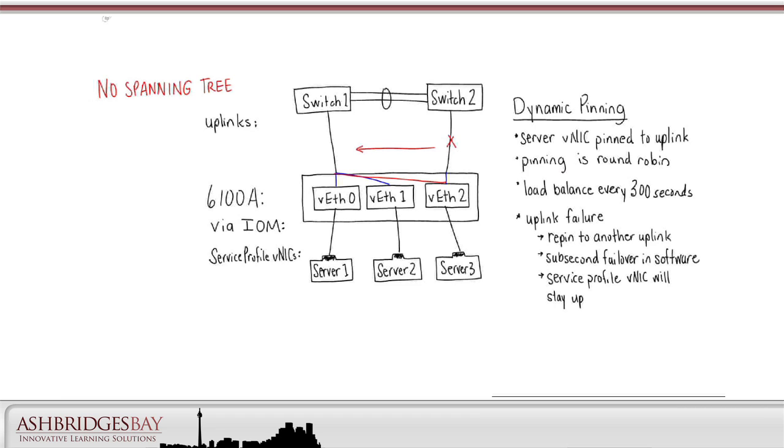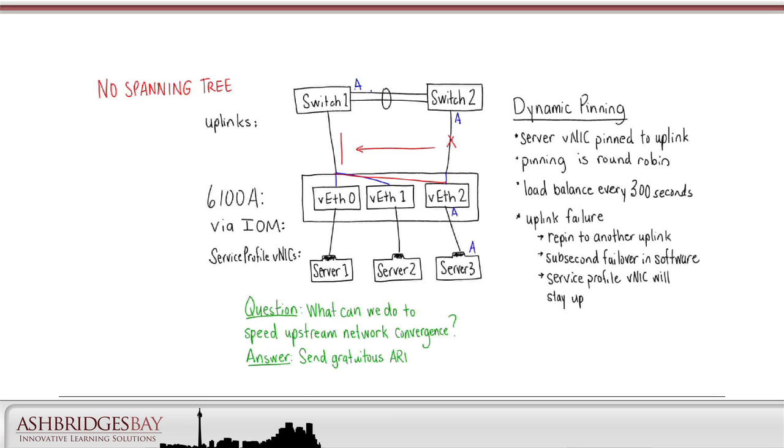The service profile vNIC will stay up. If you look at network convergence in the upstream switches, you see that the MAC address for server 3A is located on the wrong switch ports. What can we do to speed upstream network convergence? The answer is we can send gratuitous ARPs or GARPs. The fabric interconnects do this.